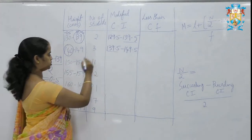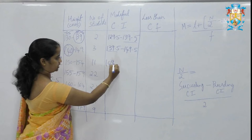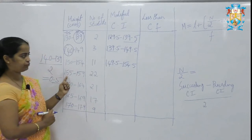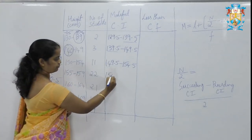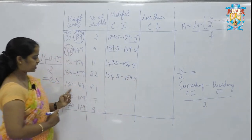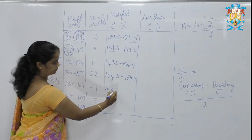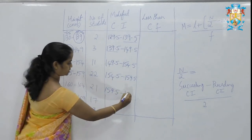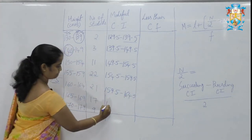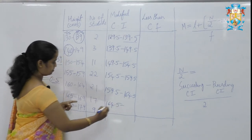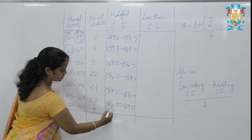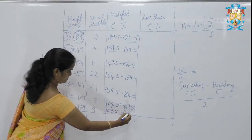This is given in the inclusive form, so continuing the conversion: the next class interval goes as 149.5 to 154.5. Similarly, deducting 0.5 from 155 gives 154.5, adding to 159 gives 159.5; deducting from 160 gives 159.5, adding gives 164.5; then 164.5 to 169.5, and finally 169.5 to 179.5.